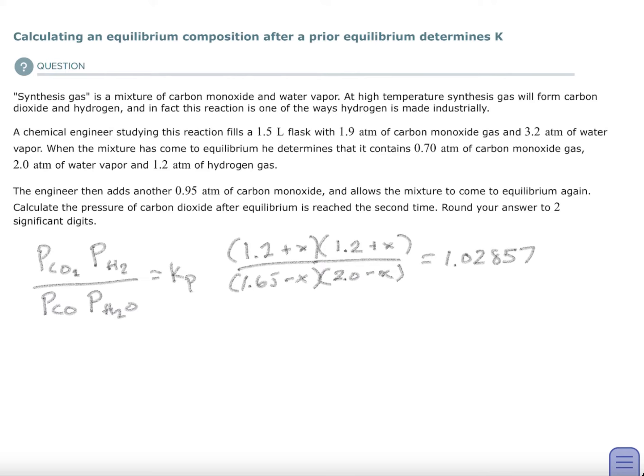So I just put them back into the K sub P formula. 1.2 plus X is my carbon dioxide, 1.2 plus X is my hydrogen, et cetera. And then that's my P. Do you see that was my old P, but it sticks around because it's my equilibrium constant. And this is going to be a new equilibrium.